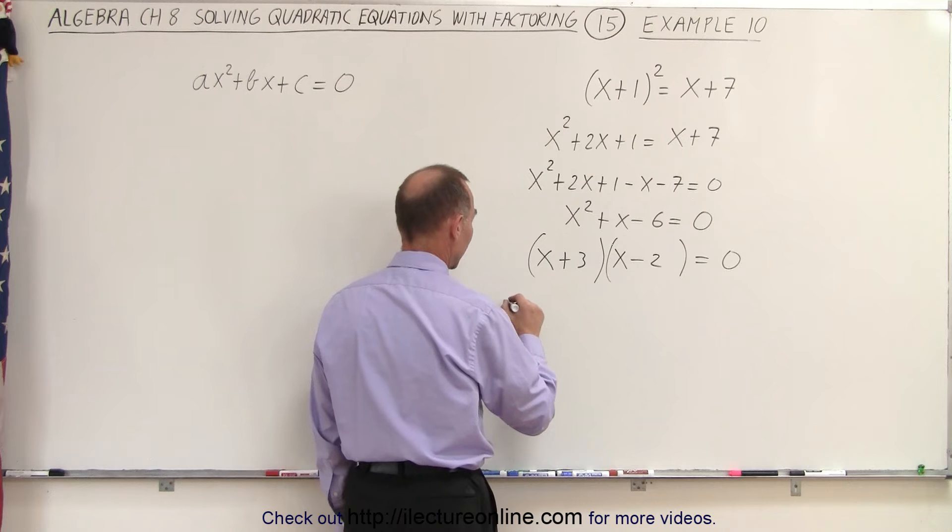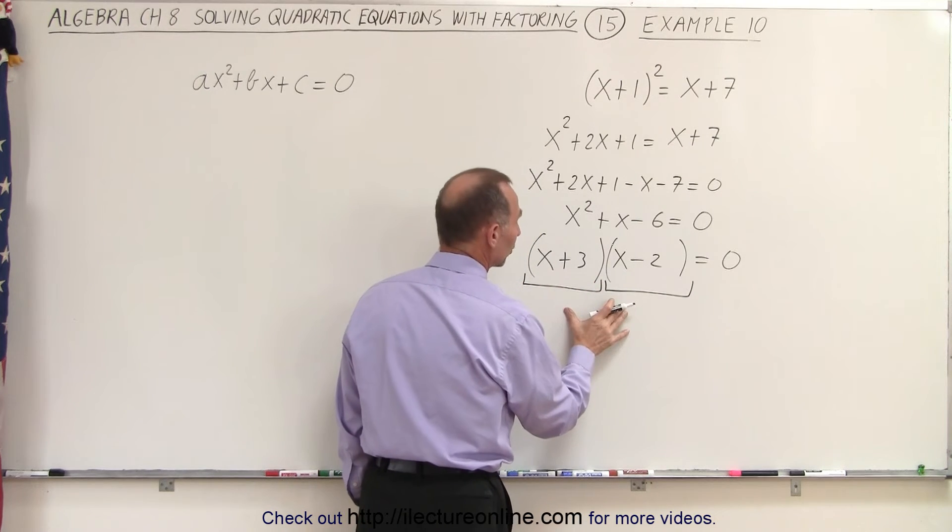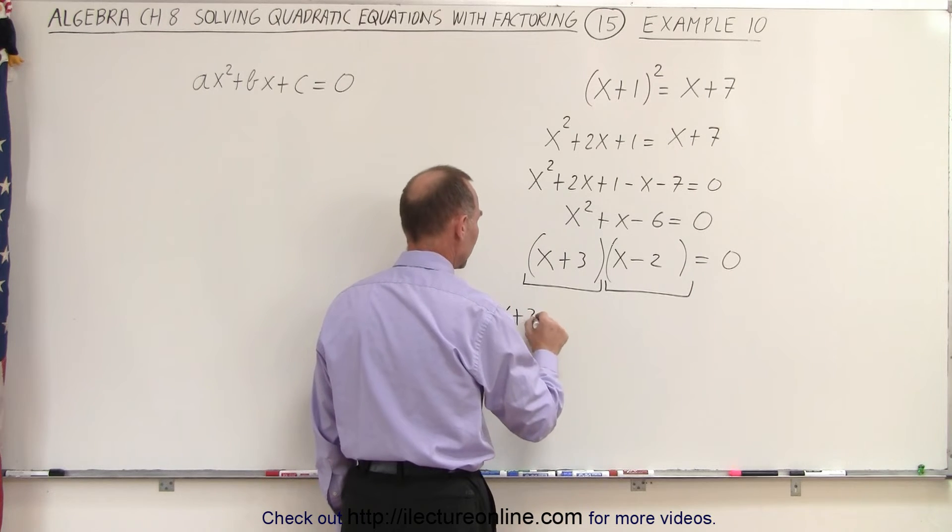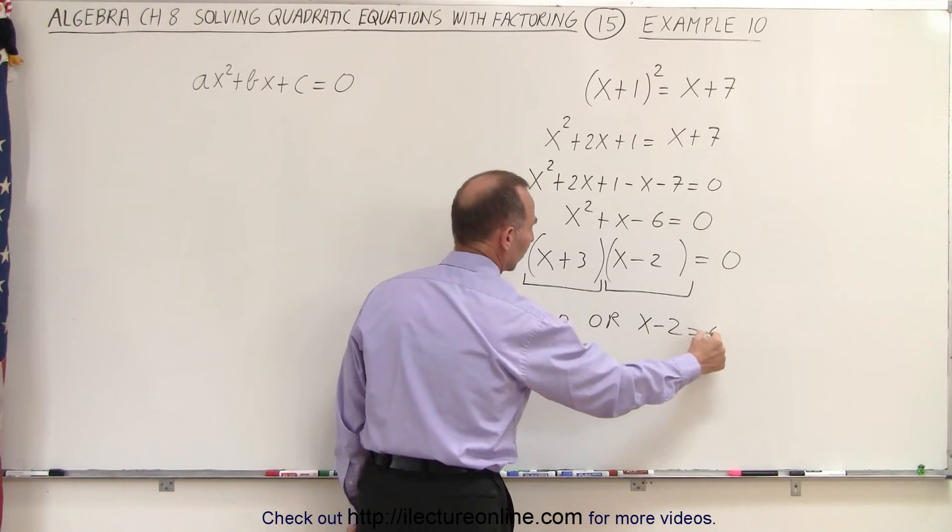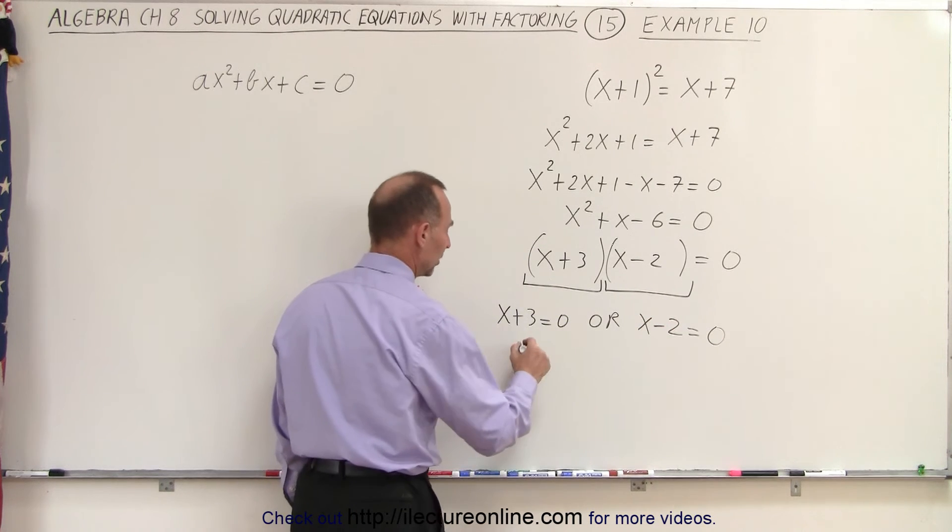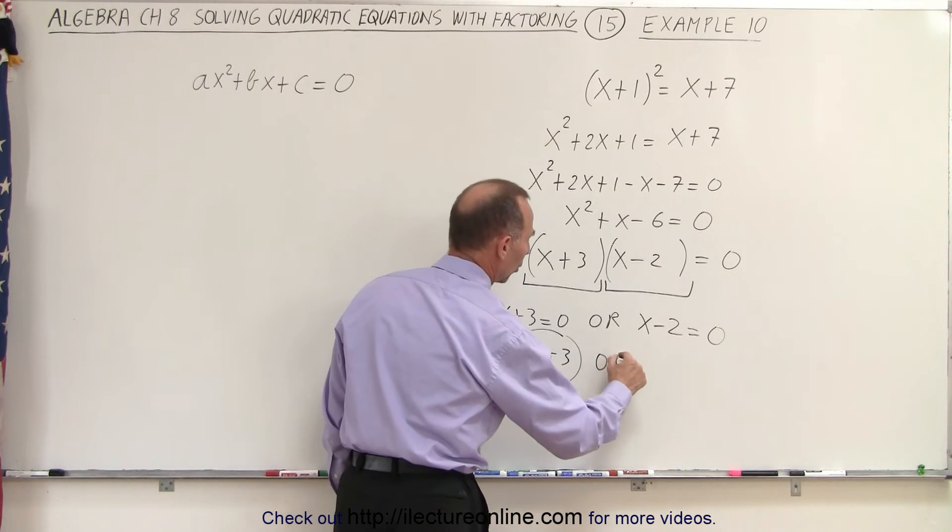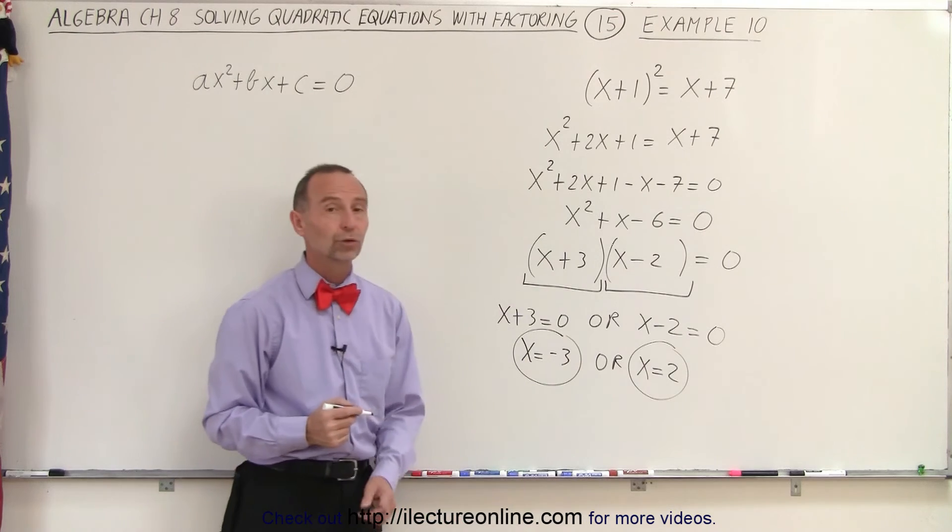Now we can then continue by saying that this means since we're multiplying two binomials and the product equals 0, that means that x plus 3 must equal 0, or x minus 2 must equal 0. Which means that x must equal negative 3 as one solution, or x equals 2 as the other solution.